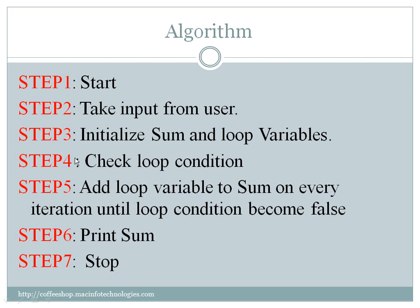We can also write an algorithm for the same program. Step 1: start. Step 2: take input from the user. Step 3: initialize sum and loop variables. Step 4: check the loop condition every time; add the loop variable to sum in every iteration until the loop condition becomes false. To make the condition eventually false, we need to increment the loop variable inside the loop by saying i plus plus — we write this in a simple English sentence in the algorithm. After all iterations, once the condition becomes false, we print the sum and stop the program.